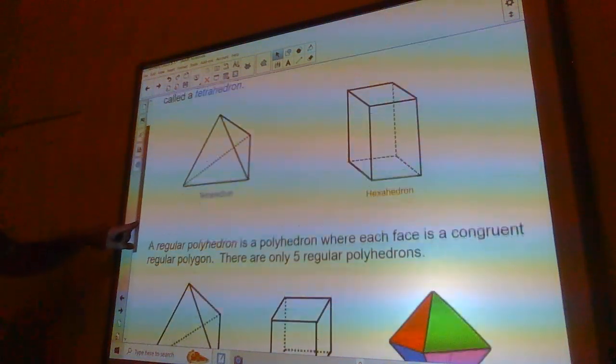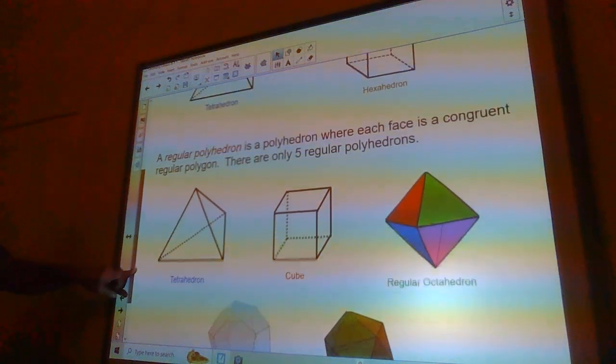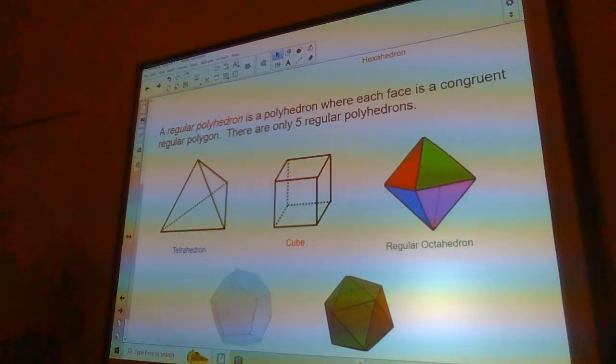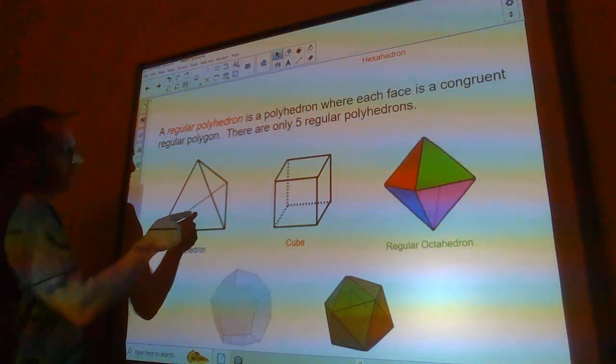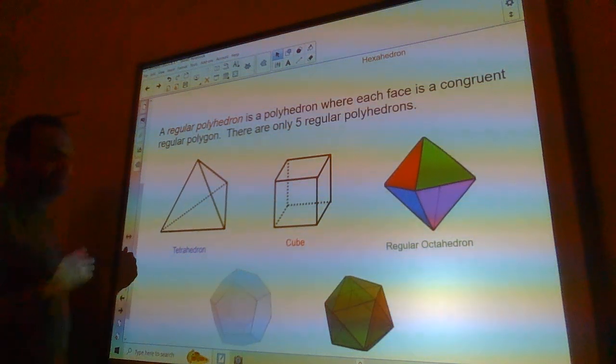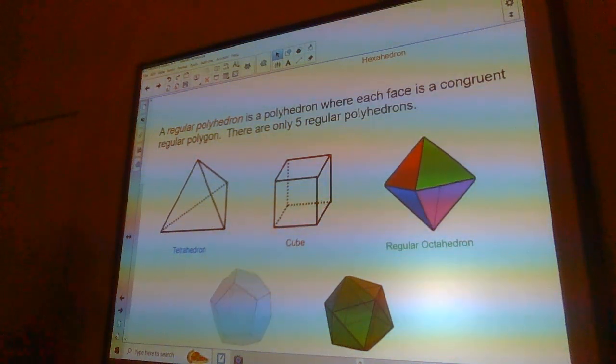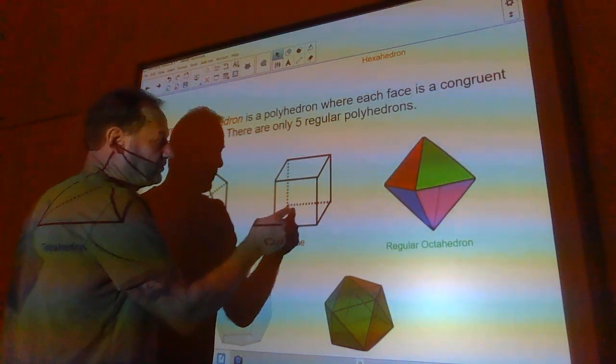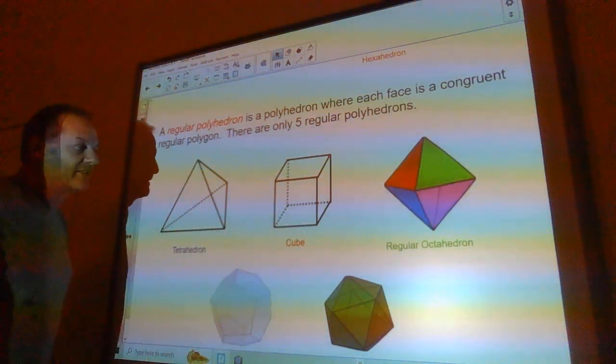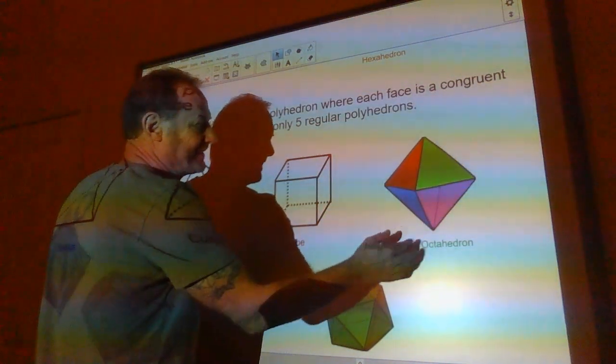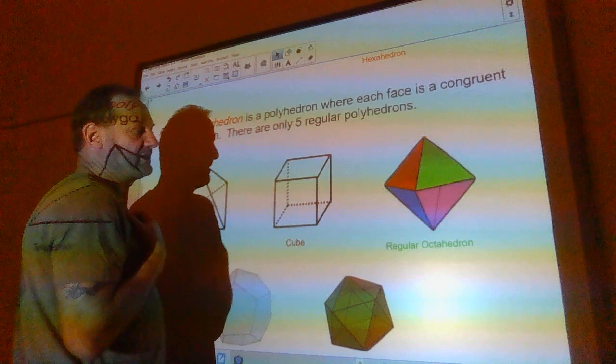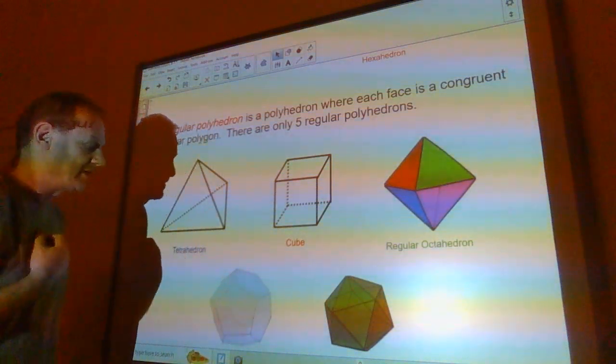A regular polygon is a polyhedron where each face is a congruent regular polygon. So in this tetrahedron, all four faces of this thing are identical triangles, equilateral triangles. This cube, each face is an identical square. This is a regular octahedron here. It has eight faces. They're all exactly the same kind of triangle.